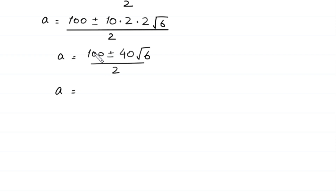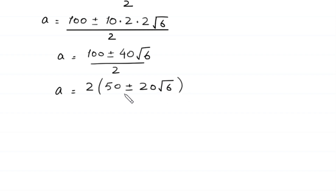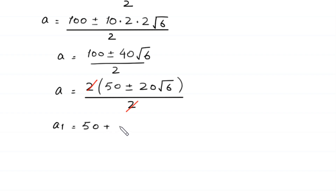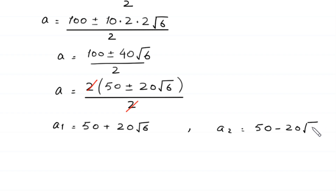A equals 100 plus or minus 10 times 2 times 2 times square root of 6, divided by 2. From these two terms we can factor out 2 as a common factor, leaving 50 plus or minus 20 times square root of 6, divided by 2. The 2s cancel, giving A1 equals 50 plus 20 times square root of 6, and A2 equals 50 minus 20 times square root of 6.